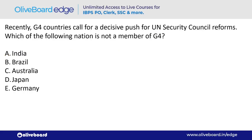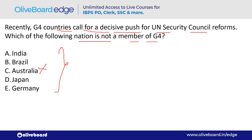G4 countries recently called for a decisive push for UN Security Council reforms. Which of the following is NOT a member of G4? Australia is not a member. The G4 countries are India, Brazil, Japan, and Germany.